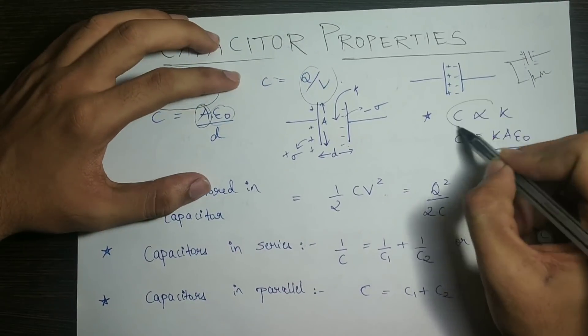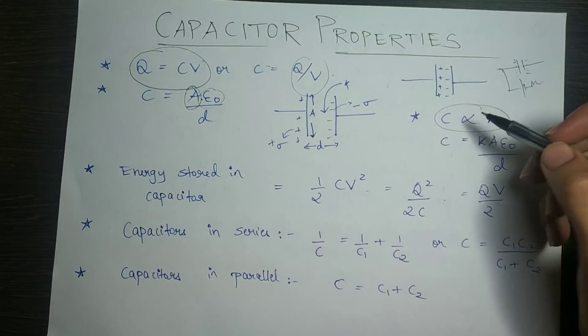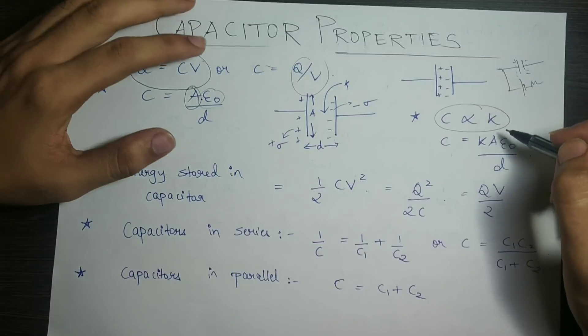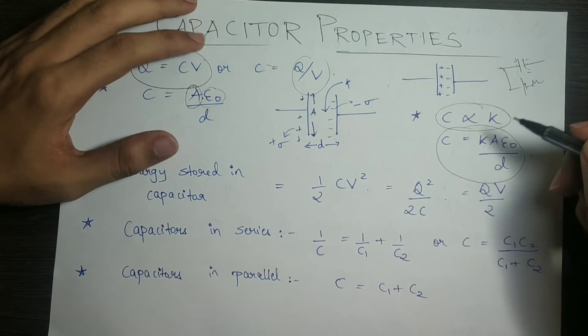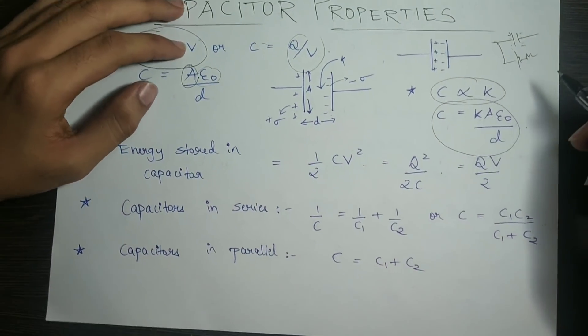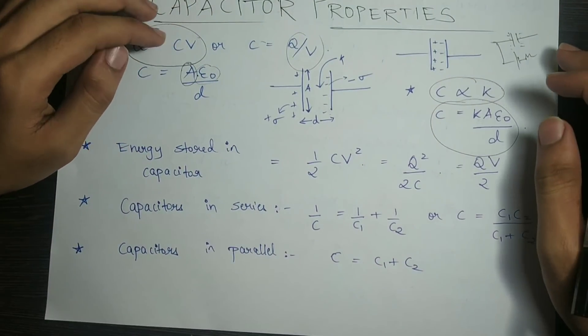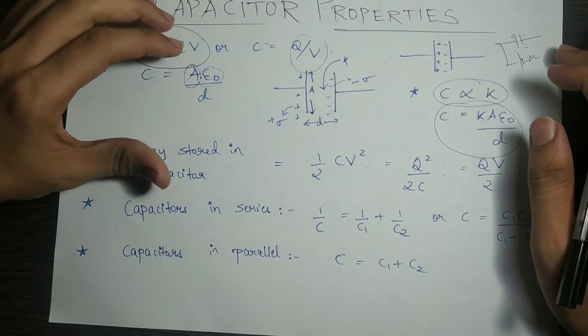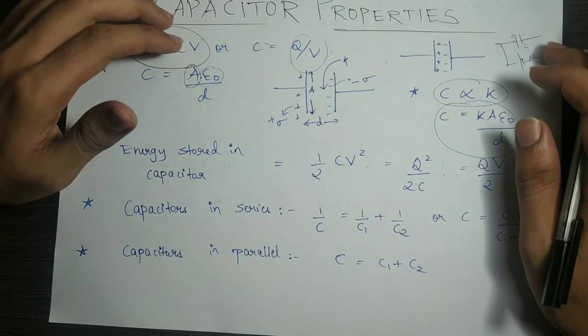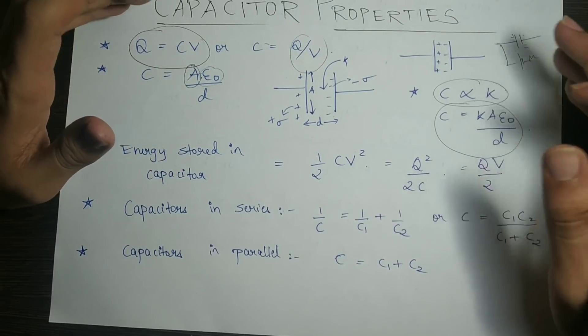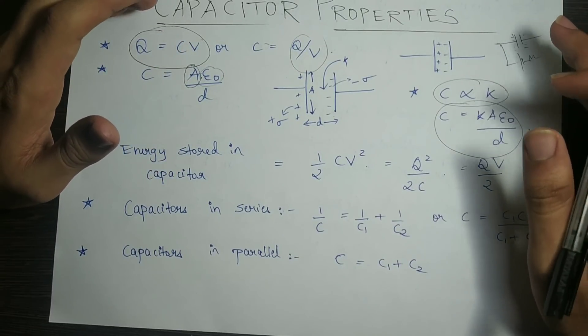C is directly proportional to k, the dielectric constant. So C equals k·ε₀·A divided by d. In case of air or vacuum, k equals 1. Energy is also stored in the electric field inside the capacitor.